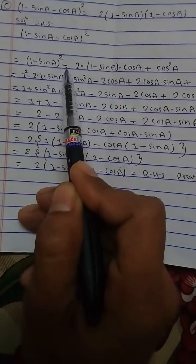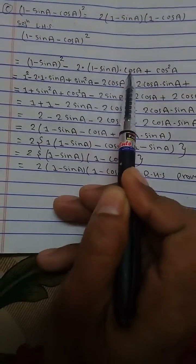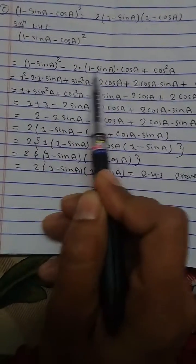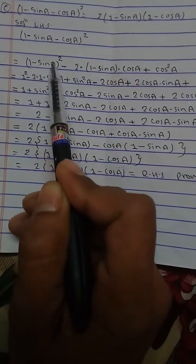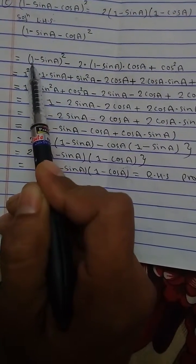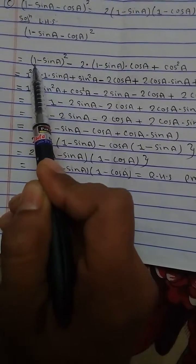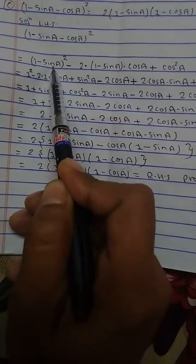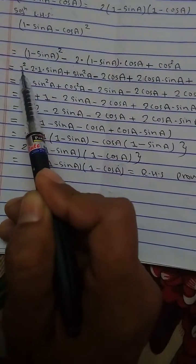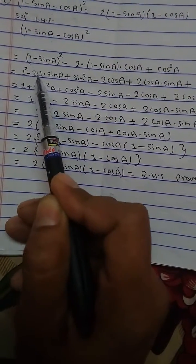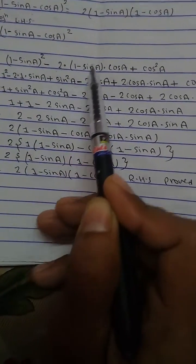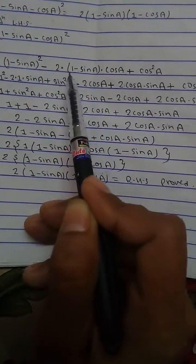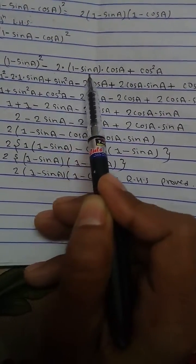It will become a squared minus 2ab plus b squared. Again using the formula and letting 1 as 'a' and sin as 'b', it will again become a squared minus 2ab plus b squared. Then we open the bracket by multiplying 1 minus cos A.